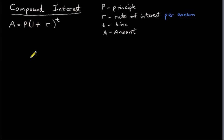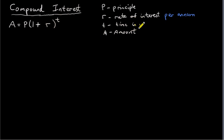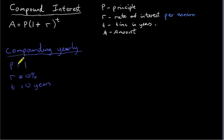One very practical situation that gives rise to the number e and the function e to the power of x is compound interest. To start, let's remind ourselves what compound interest is for the case where we're compounding yearly. T is the time in years, P is the principal — that's the amount of money we invest, R is the rate of interest per annum, and A is what the principal amounts to after time T.